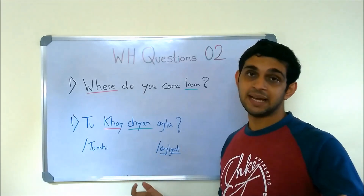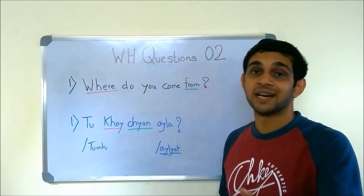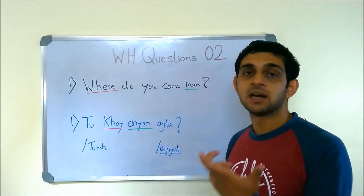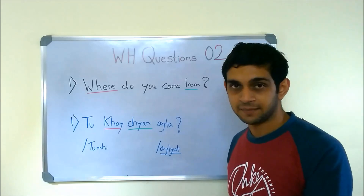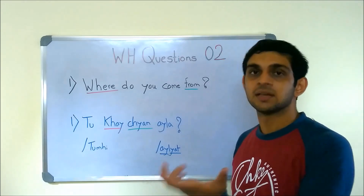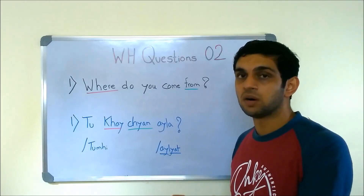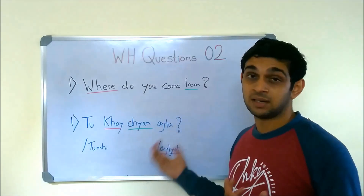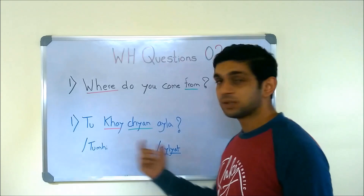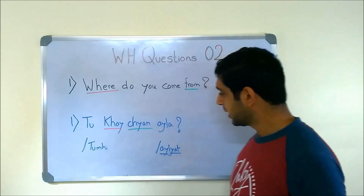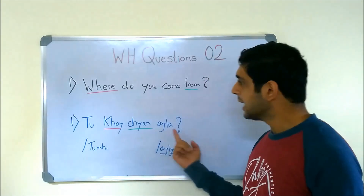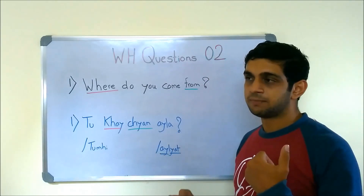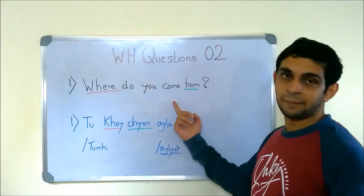KHONI CHAAN — when we say it, we don't say it as two separate words, we say it as one word directly: KHONI CHAAN. But for understanding I wrote it separately. AILA is basically CAME.